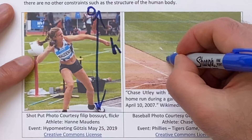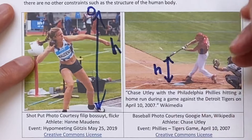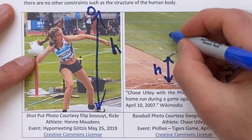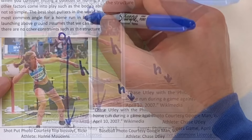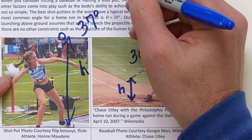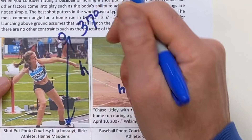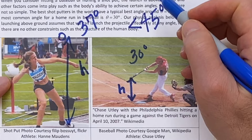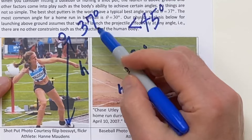And here's the baseball — Chase Utley. We did a baseball problem already, but you see that you're off the ground. When they do measurements of world-class athletes, they find that for baseball you get around 30 degrees for home runs. For the shot put, around 37 or 38 degrees. We're going to do pure physics and show that the angle is not 45 degrees but actually less.